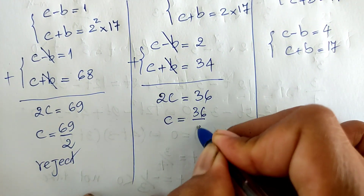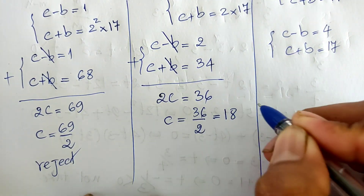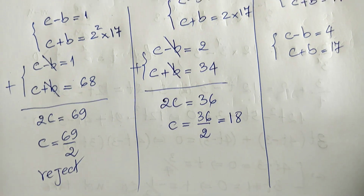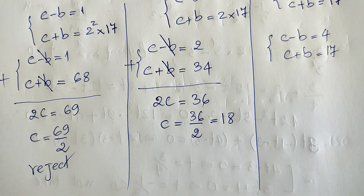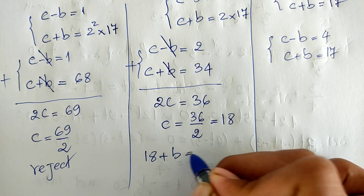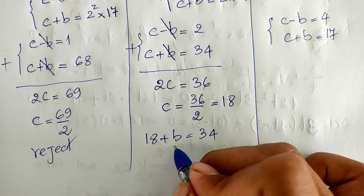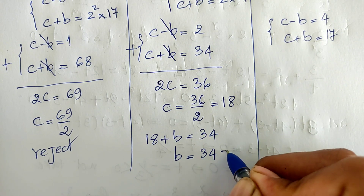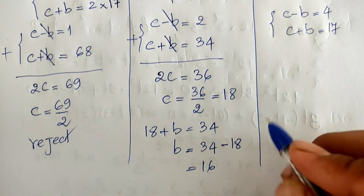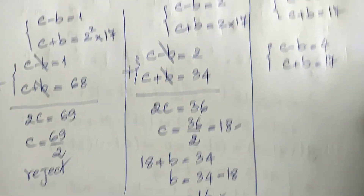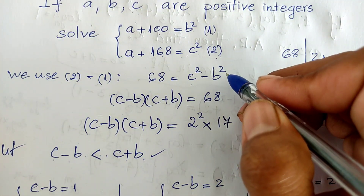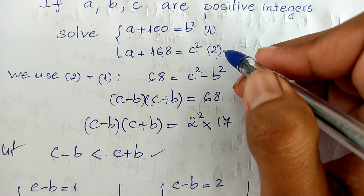So c equals 36 divided by 2, which equals 18. Now we can find the value of b: 18 plus b equals 34, so b equals 34 minus 18, which equals 16.